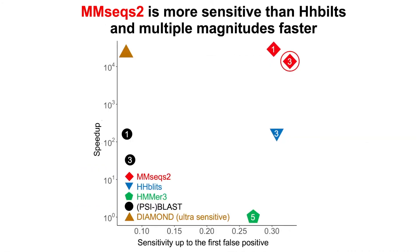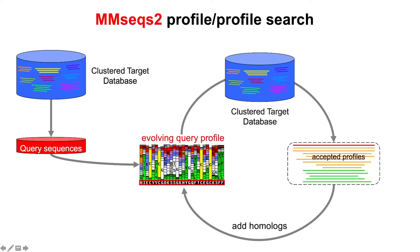By implementing the reverse profile search combined with the improved profiles, we achieve a first iteration that is nearly as sensitive as HHBlits after three iterations. We also implemented an iterative search workflow into MMSeqs2: first we search the clustered target database against the query sequences, accept hits, swap the results to form an evolving query profile, and search that profile against the clustered target database again iteratively. To perform the alignment between the query profile and target database, we needed to improve our Smith-Waterman algorithm to implement profile-profile alignment.